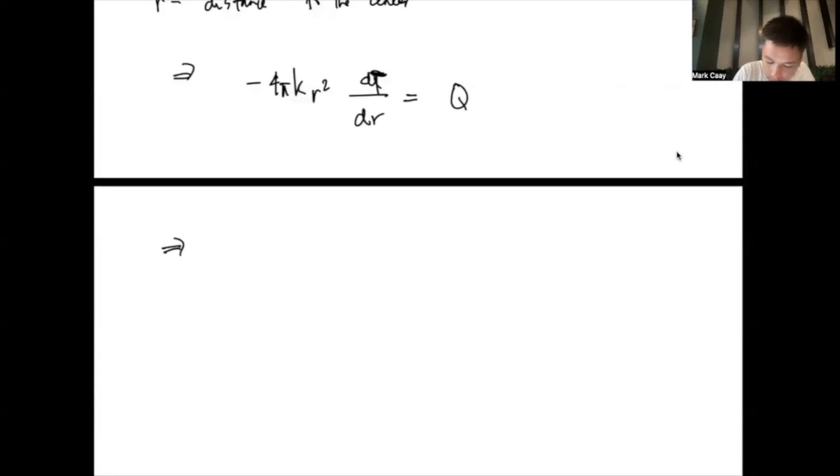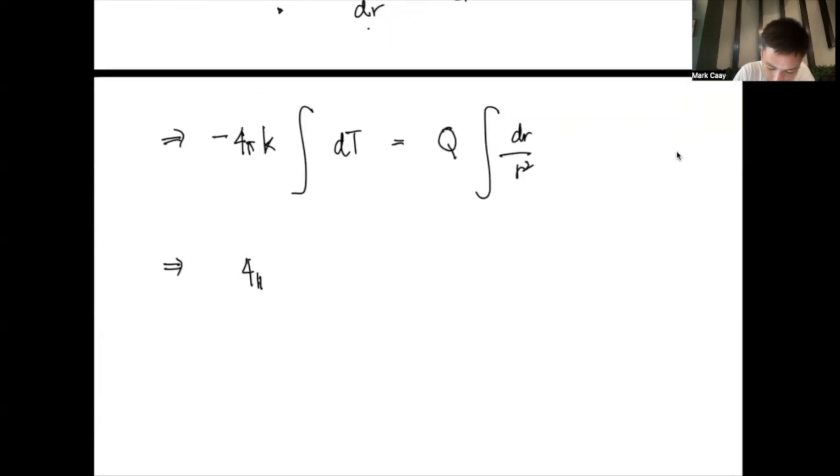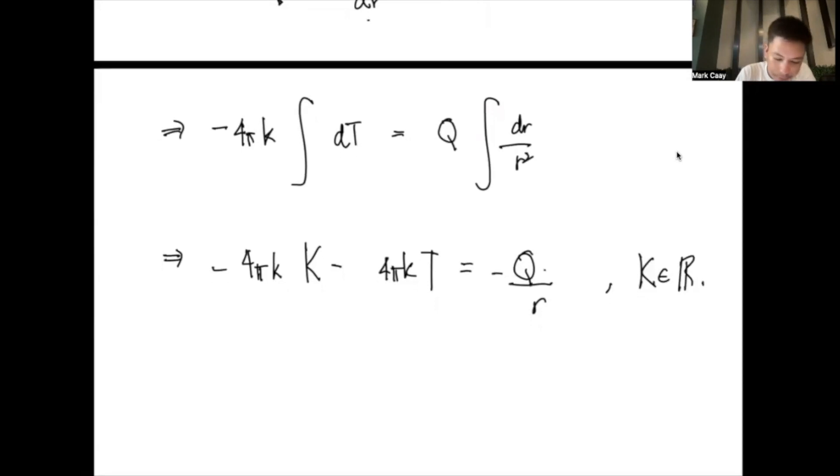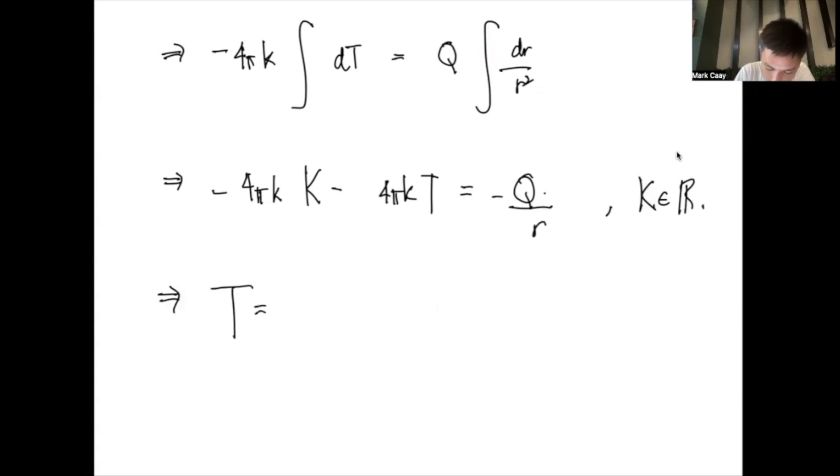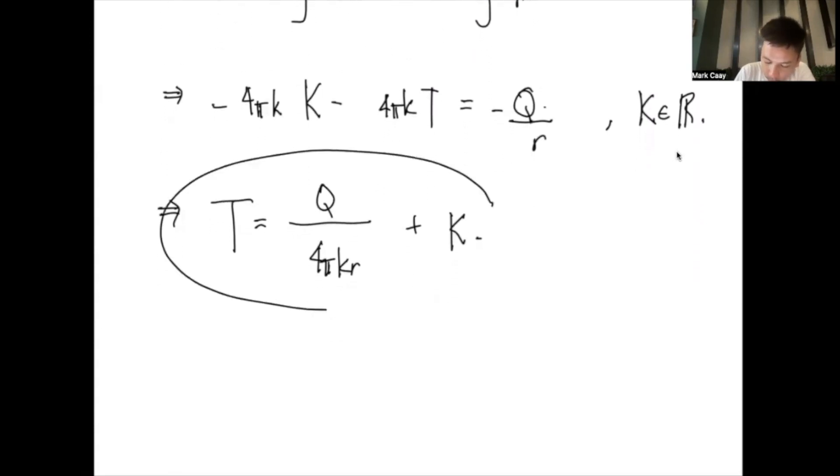So, if I'm going to conduct the separation of variables, we have no problem because nothing will be zero. So, we have negative 4 pi K integral of dT which is equal to Q integral dr over r squared. Multiply both sides by dr, so Q moves to the denominator, and then r squared moves to the denominator. So, this implies 4 pi K capital K minus 4 pi K T equals negative Q over r. So, our K is some constant. This implies that our capital T is equal to Q over 4 pi K r plus K. So, this is now the solution of your differential equation.